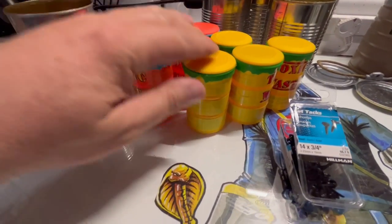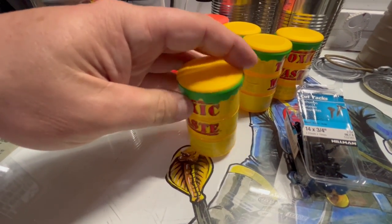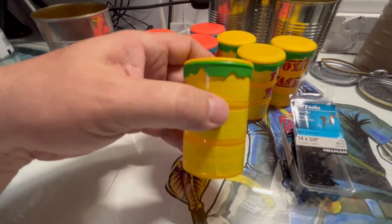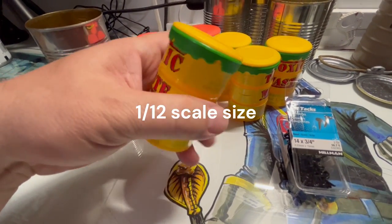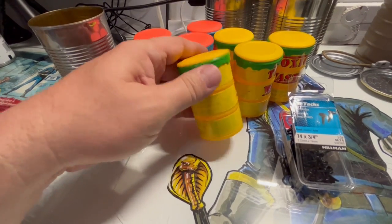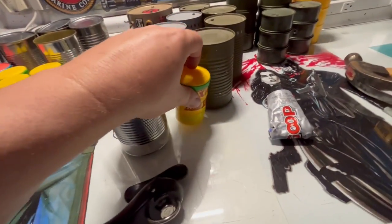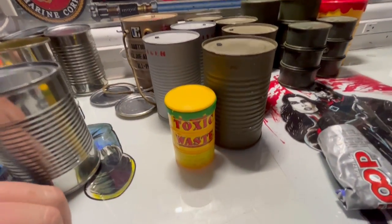Now I know a lot of people have been showing these. These are perfect barrels for the 1/12 scale. I actually did a video on how I clean these up and paint them and they look great for 1/6 scale. You can see how much smaller they are than a regular can.